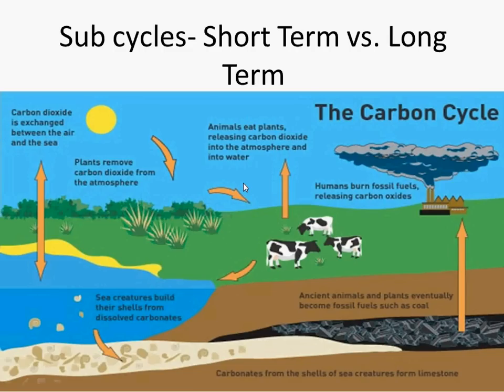We look at the carbon cycle. I like to think about the carbon cycle as having a short-term carbon cycle as well as a long-term carbon cycle. This diagram that we're looking at here is a simplified version of how the carbon cycle works. Let's go ahead and start with the long-term cycle.